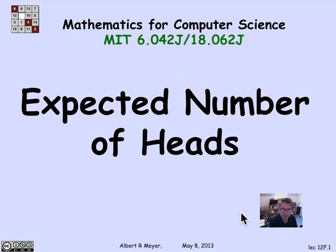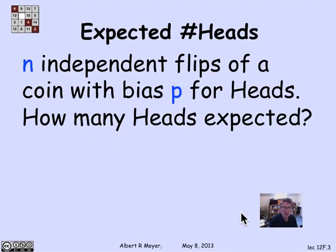So for practice with expectation, let's calculate the expected number of heads in n coin flips. Just working directly from the definition, because we have tools to do that. We're imagining n independent flips of a coin with bias p. So the coin might not be fair. The probability of heads is p. It would be biased in favor of heads if p is greater than one half and biased against heads if p is less than one half. And we want to know how many heads are expected.